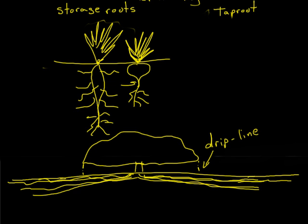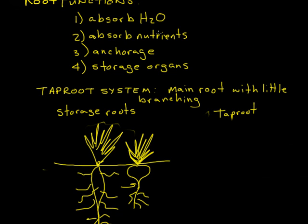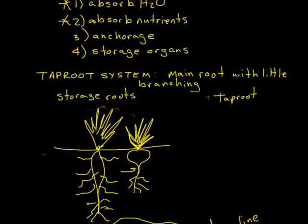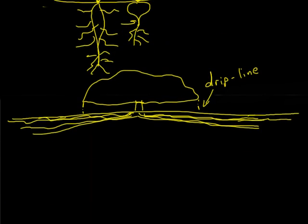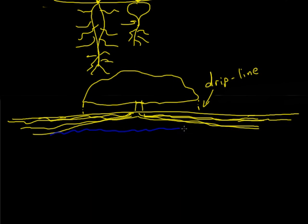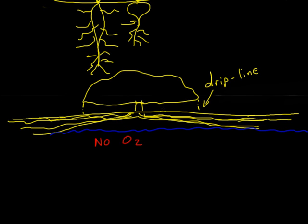The reason roots grow relatively shallowly is that roots are responsible for absorbing water and nutrients, and in soil most of that can be found in the upper portions of the soil profile. Also, once you hit the water table, there's no oxygen to be found in those lower regions of the soil. That's a problem because all living cells respire — they need oxygen. This is the main reason roots grow at more shallow depths.